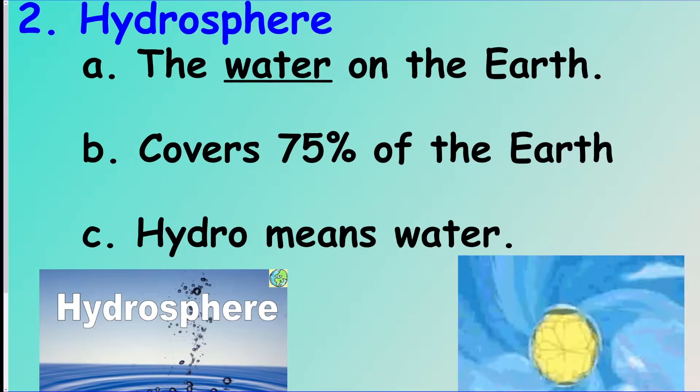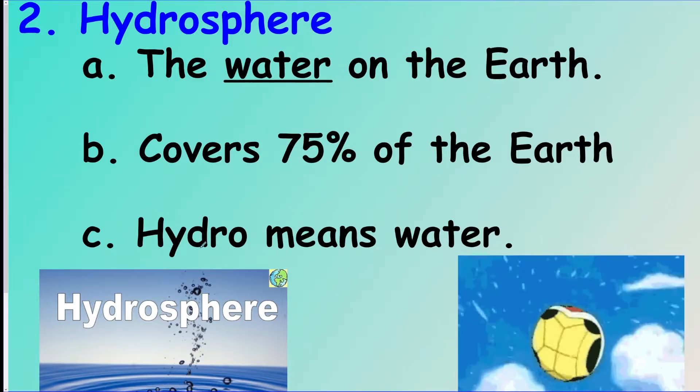The next sphere of the earth is the hydrosphere. This is just all the water on the planet. There's a lot of water on the earth. This is all in the oceans, the lakes, the glaciers, the rivers, all water.